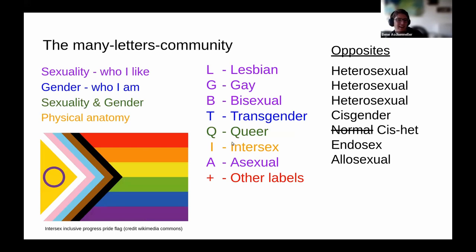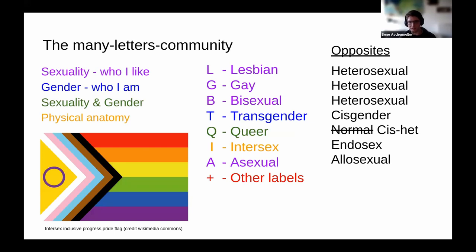I'm Bene, and I'll start with a quick introduction to the letters that describe our community. There are four letters related to sexuality: L for lesbian, G for gay, B for bisexual, and A for asexual. T stands for transgender, which relates to gender identity and is independent from sexuality. Q for queer can describe both sexuality and gender, and is sometimes used to describe the entire LGBT community. Literally, queer means something like 'strange' — about a hundred years ago it was used to insult homosexual people, and only in recent decades was the word reclaimed by the LGBT community.